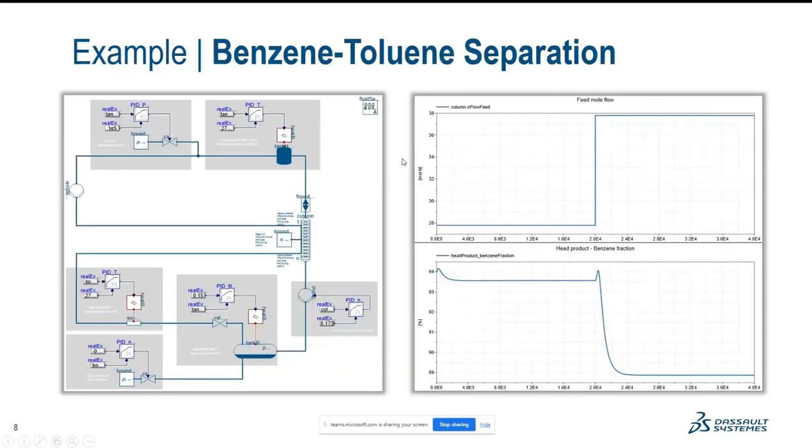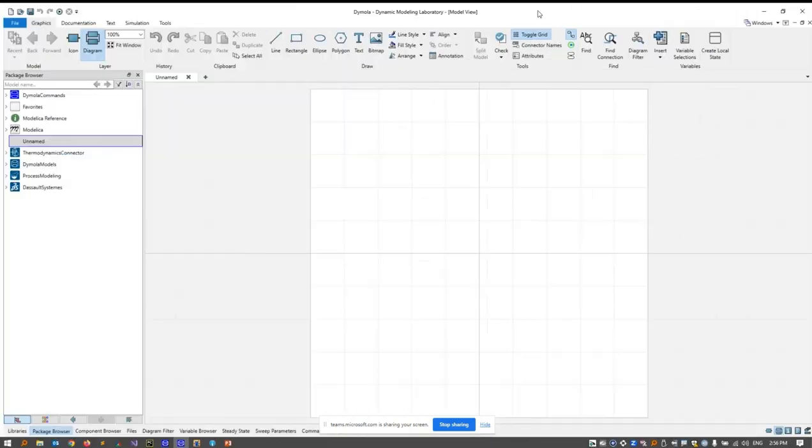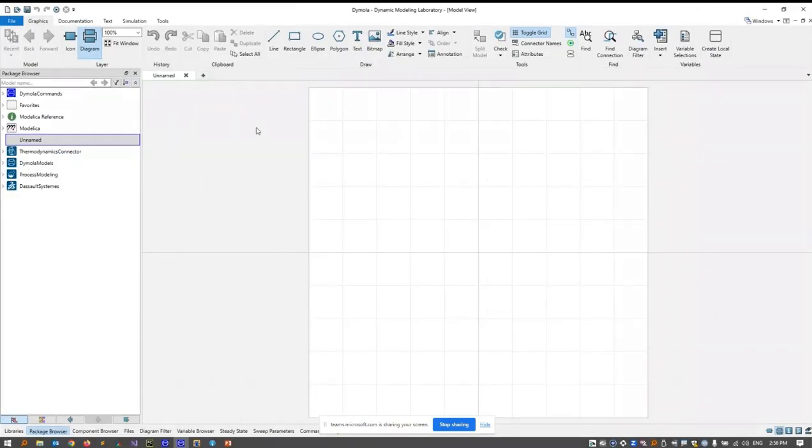At this point, I would like to show you two things live in Dymola. I think you can see my Dymola now. Here on the left, I don't know if it's large enough, if you can see it, but this is a package browser where the loaded libraries are listed. Here is the thermodynamics connector library, and here's the process modeling library.